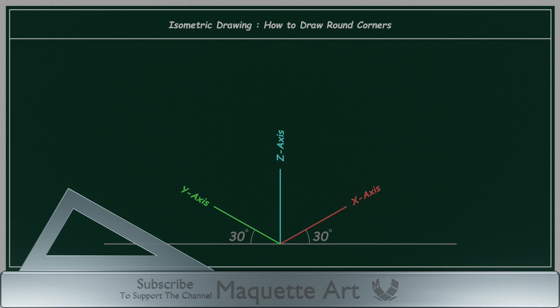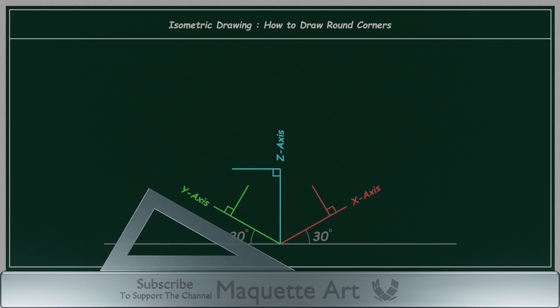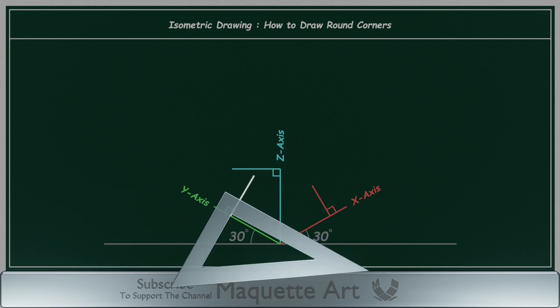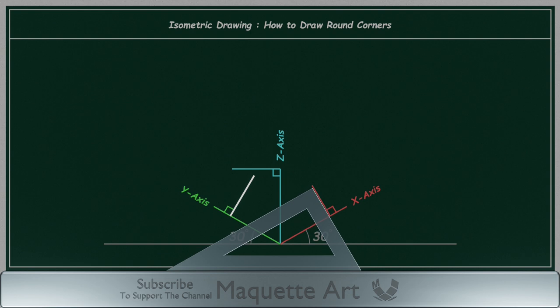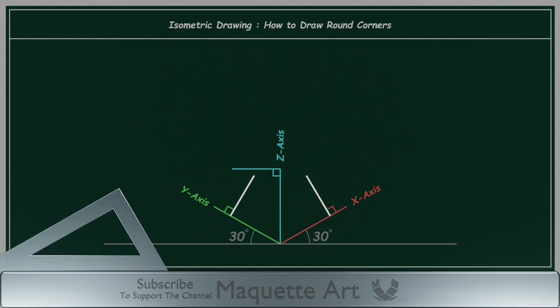Now how can we draw a perpendicular line to each of those axes? For the X and Y axis we will use the triangle, like this. And for the Z axis we will use the T-square.